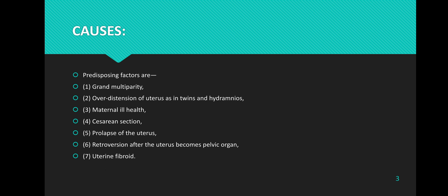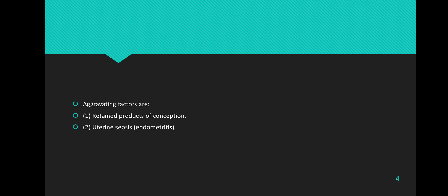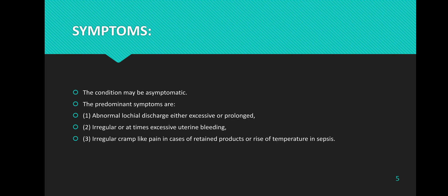Additional predisposing factors include: six, retroversion after the uterus becomes a pelvic organ; and seven, uterine fibroids. Aggravating factors include: one, retained products of conception; and two, uterine sepsis, which we call endometritis.